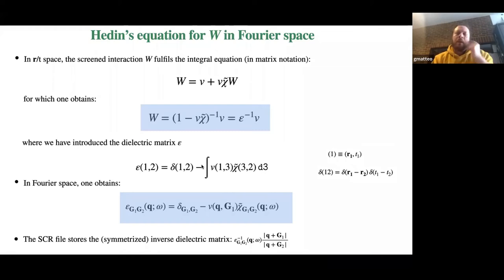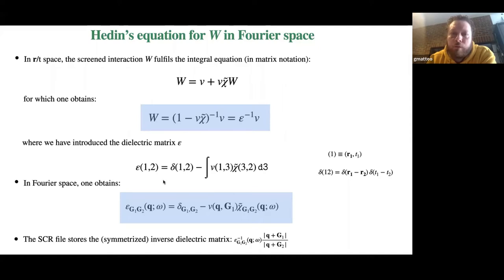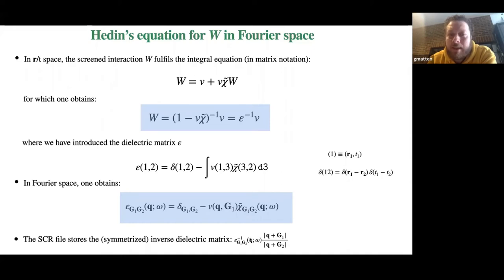Regarding the computation of the screened interaction: according to Hedin, W fulfills a Dyson-like equation in matrix notation, which can be rewritten in terms of the inverse dielectric matrix epsilon minus one. Epsilon is related to the irreducible polarizability, and in Fourier space the quantity computed in the RPA code involves the Fourier transform of the Coulomb interaction, 4 pi divided by |q+g|. The symmetrized inverse dielectric matrix epsilon minus one is what we store in the screening file, used as ingredient in the sigma code.